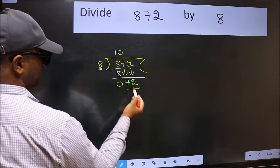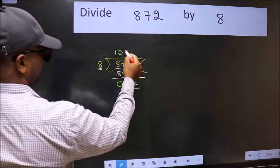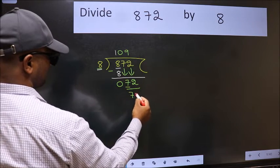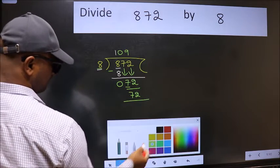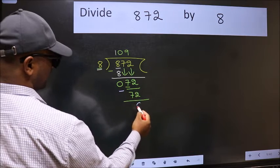Now 72. When do we get 72 in 8 table? 8 nines 72. Now we should subtract, we get 0.